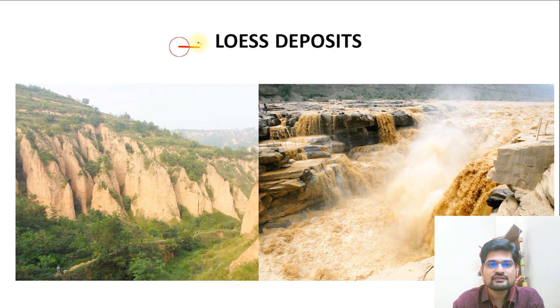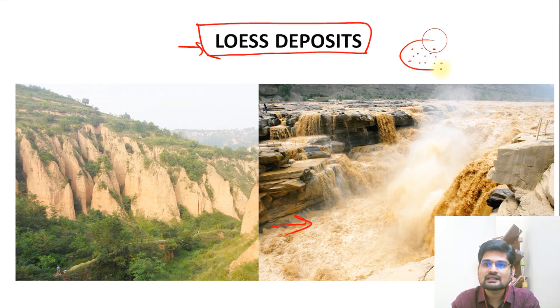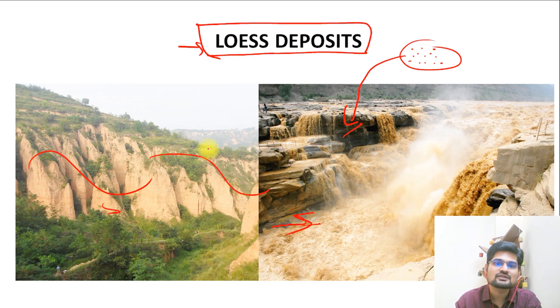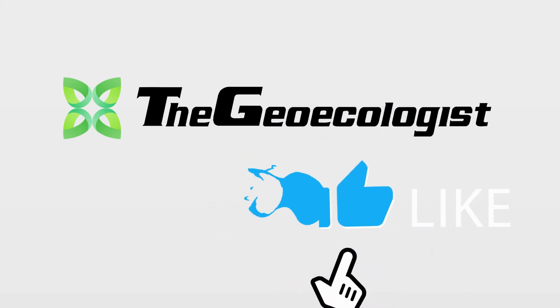The final depositional feature is loess deposits. Small yellow-colored silts are carried away by wind and deposited, as seen with the Yellow River in China (Huanghe River), which is known as the yellow river because of these aeolian loess deposits. Having covered aeolian landforms — their types, local names, and global distribution — the next session will cover karst landforms. Stay tuned and best wishes.